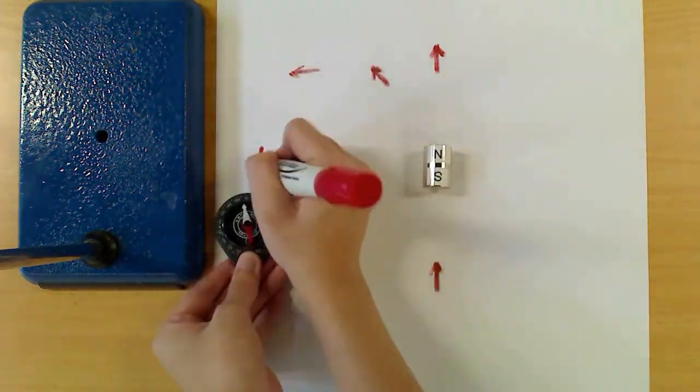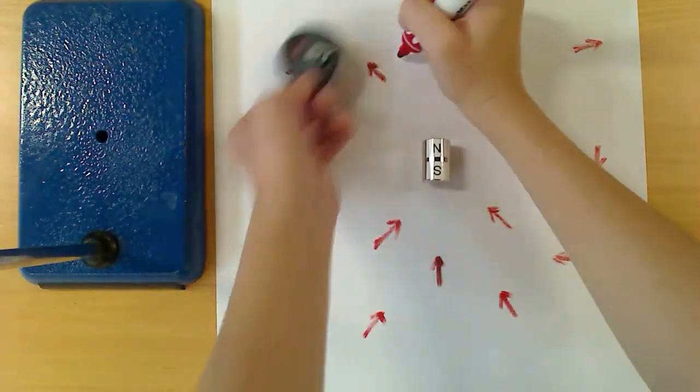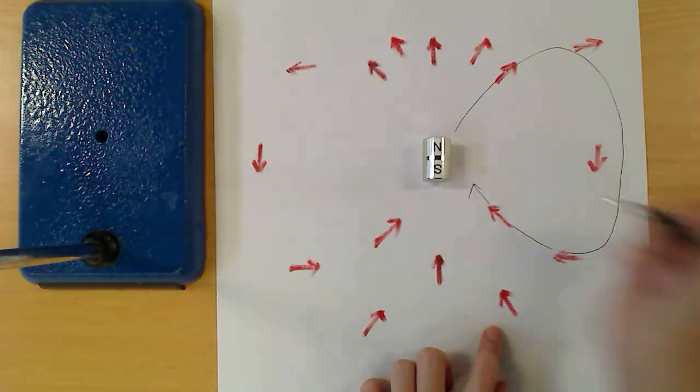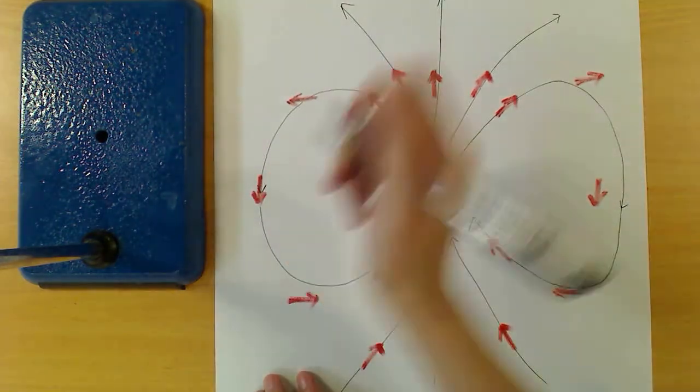Now if we do this for lots of points around the magnet, we'll get the magnetic field. So if we connect these vectors, we'll get the field line representation of the magnetic field around this magnet.